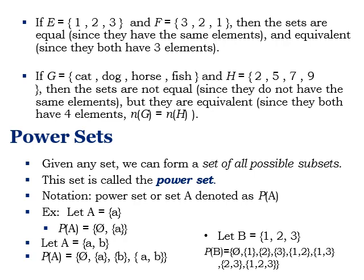For example, if G = {cat, dog, horse, fish} and H = {2, 5, 7, 9}, then the sets are not equal since they do not have the same elements, but they are equivalent since both have 4 elements.